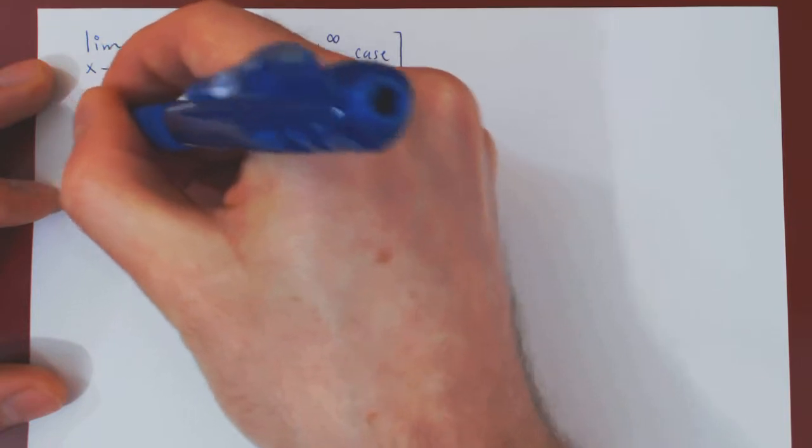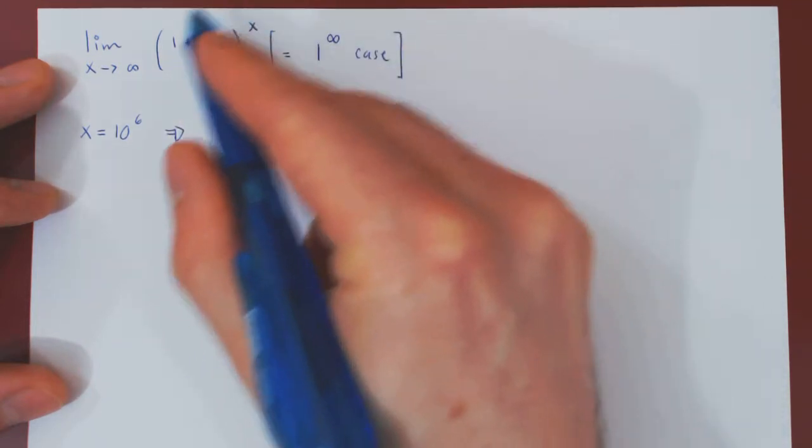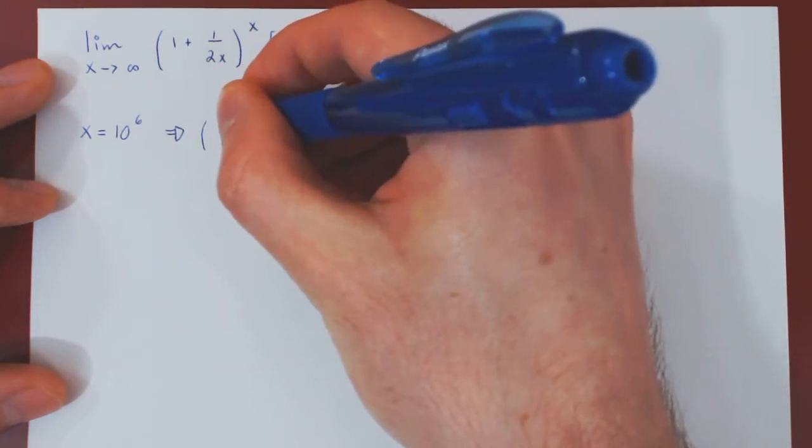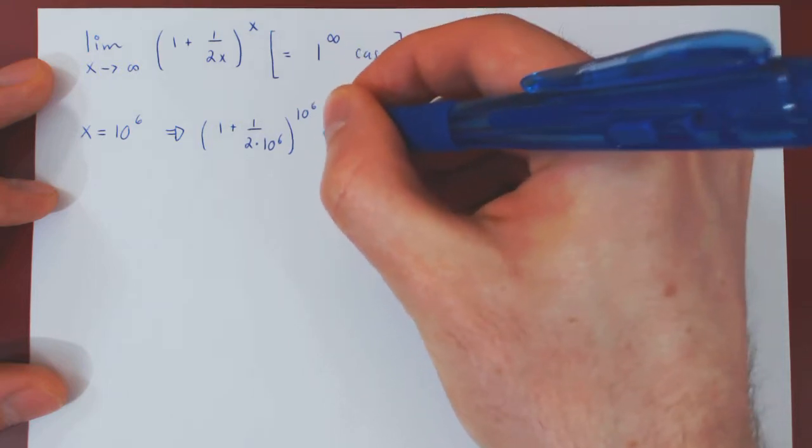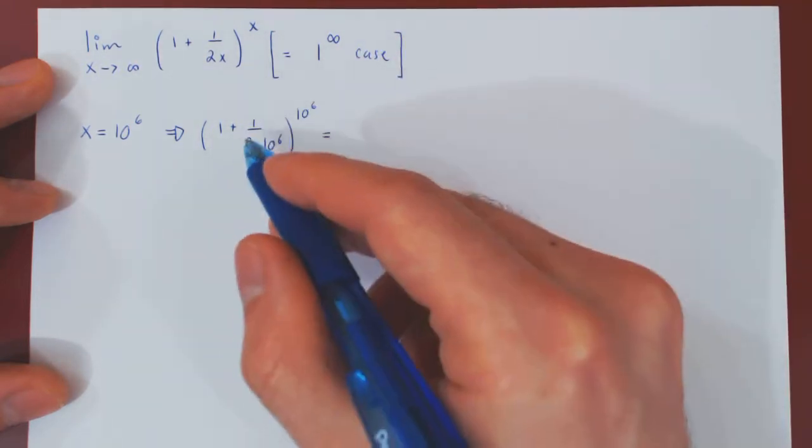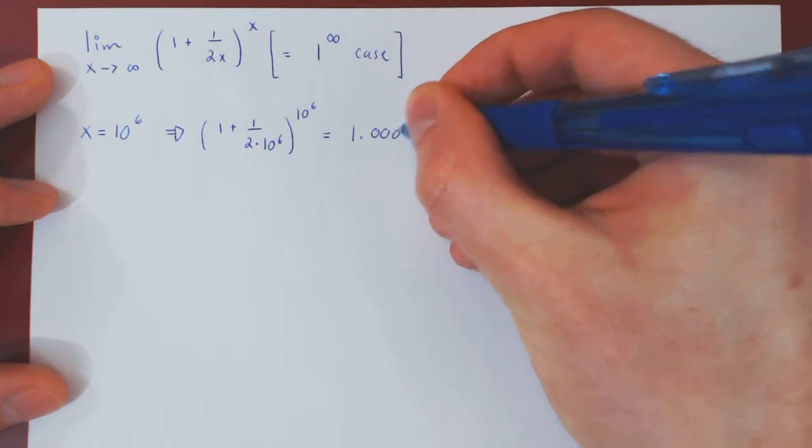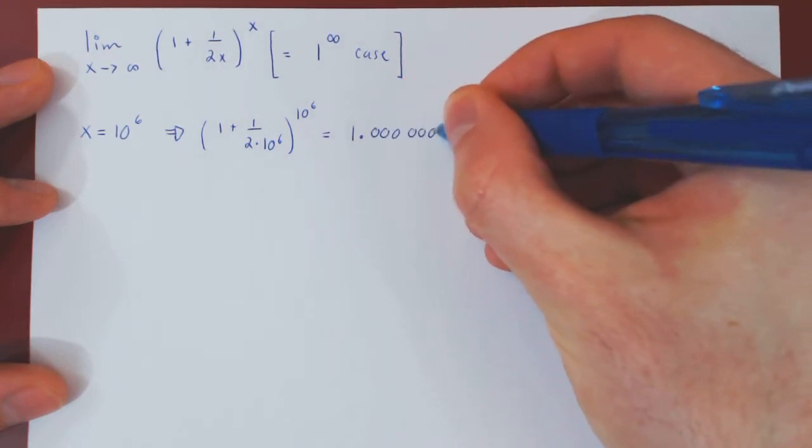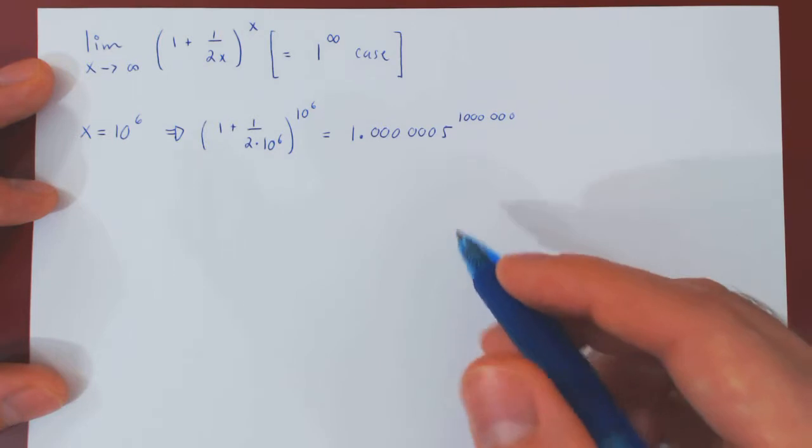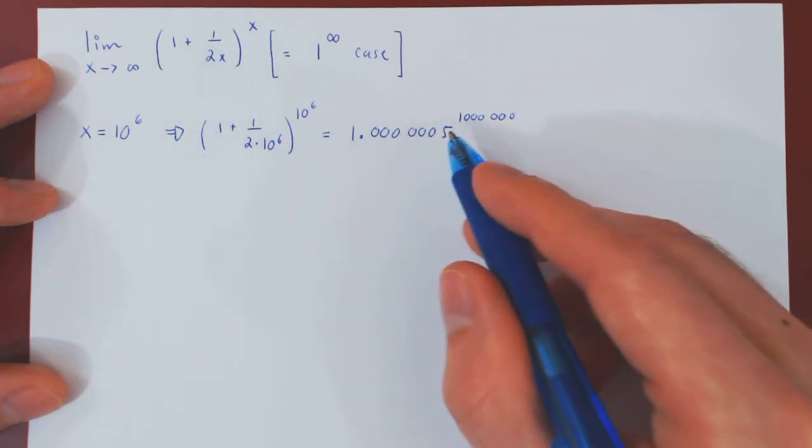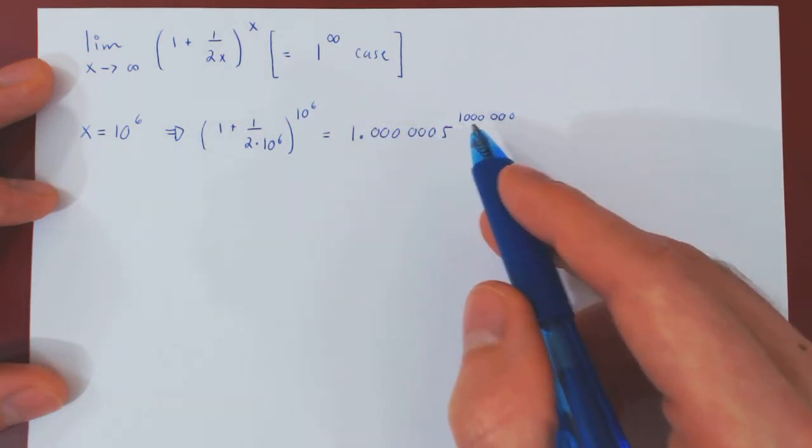Well, let's take a large value of x. Suppose we take x to be a million, so 10 to the 6th. Let's plug in here 10 to the 6th. So this will give you 1 plus 1 over 2 times 10 to the 6th to the power of 10 to the 6th. If you calculate this, this will be 1 plus 1 over 2 million, which is exactly 1.0000005, to the exponent 1 million.